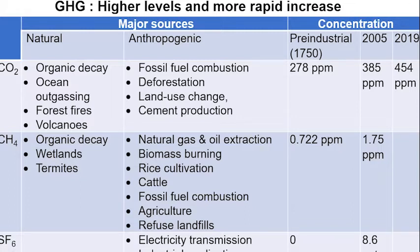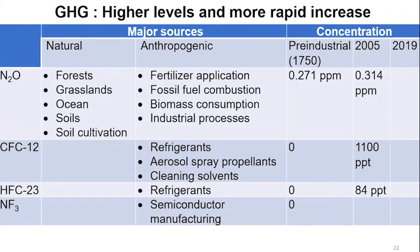Similarly, we never used to have any of these SF6s and chlorofluorocarbons — manmade chemicals. Now they are in the atmosphere. The ppm is parts per million, ppb is parts per billion, and ppt is parts per trillion of particles in one volume. In some cases we used to have very small amounts or no gases of these types in the atmosphere, but today these gases are there and they are worrying because they will have an impact on the energy balance in the atmosphere.